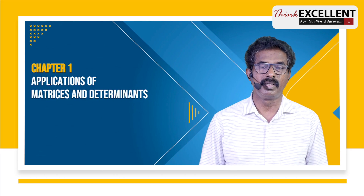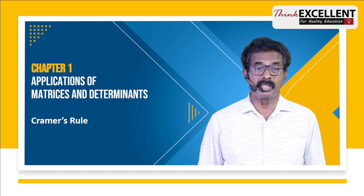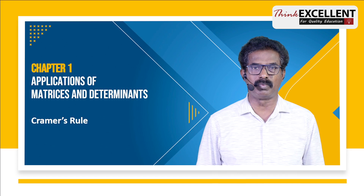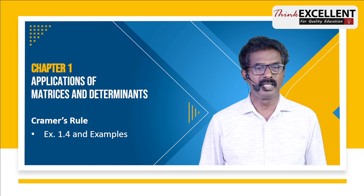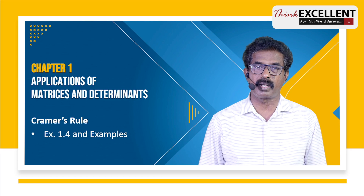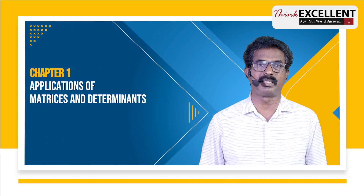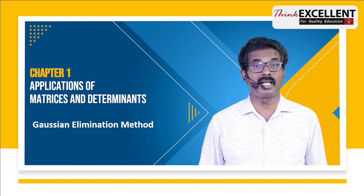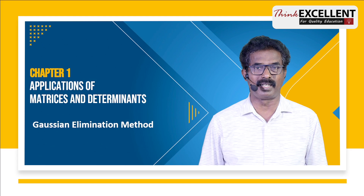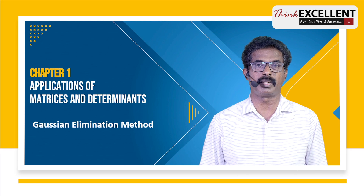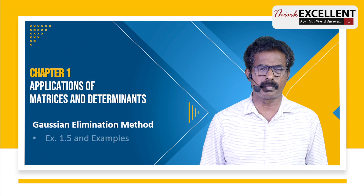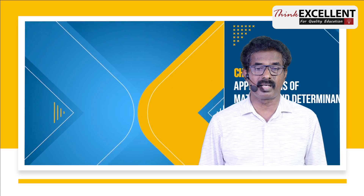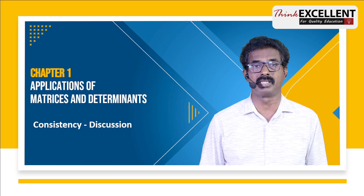Second, you have to study Cramer's Rule. You know when you can apply Cramer's Rule — when delta is not equal to 0. Study exercise 1.4 and the example sums. Then study the Gaussian Elimination Method. You have to solve equations using this method — that is exercise 1.5 and the related example questions.